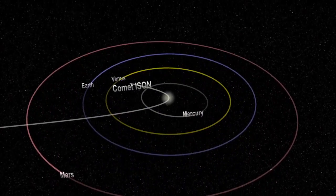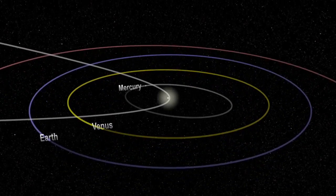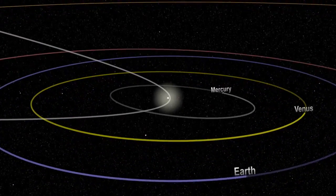Before it does so, it will pass within about 40 million miles from Earth on December 26, assuming it survives its trip around the Sun.